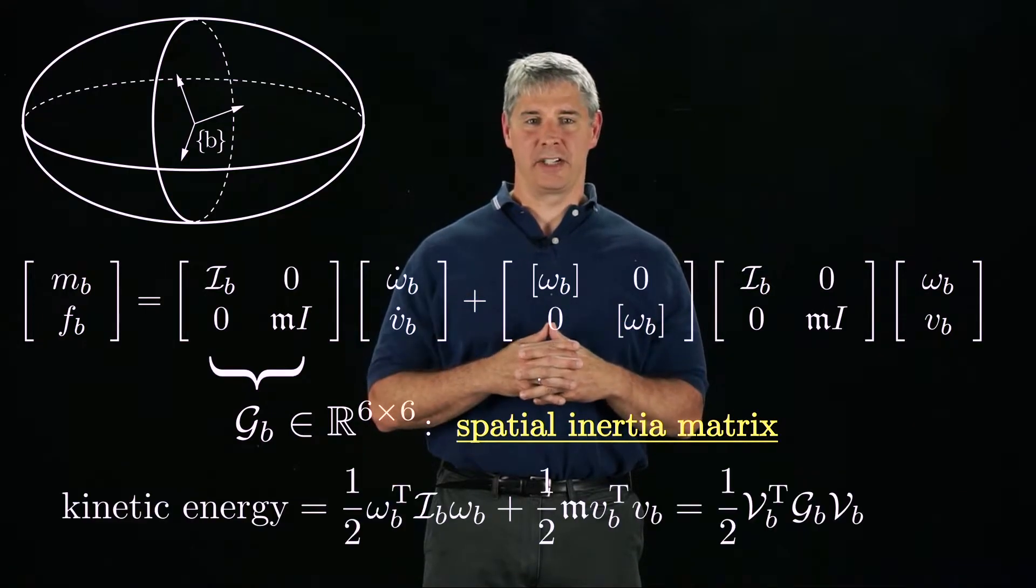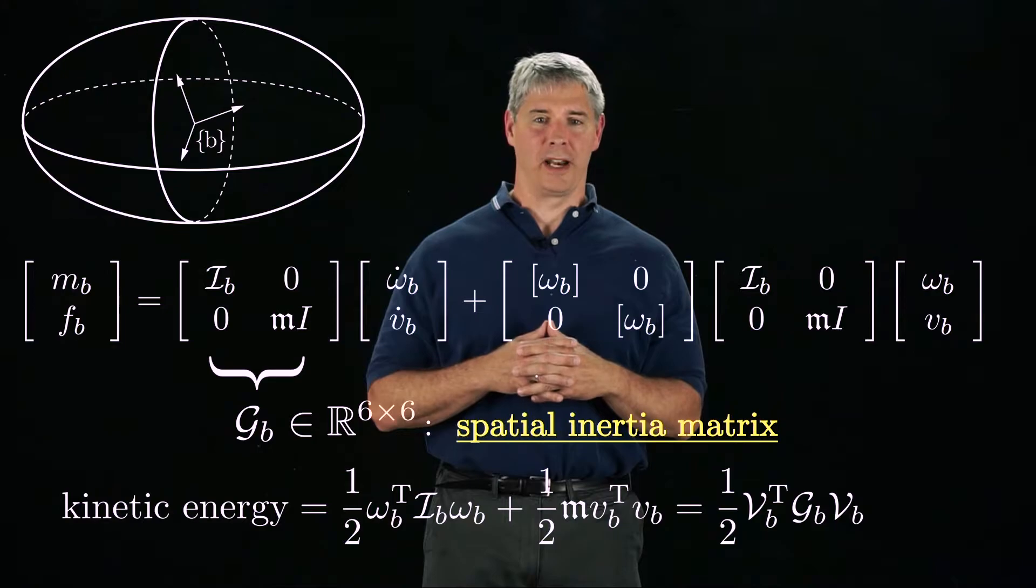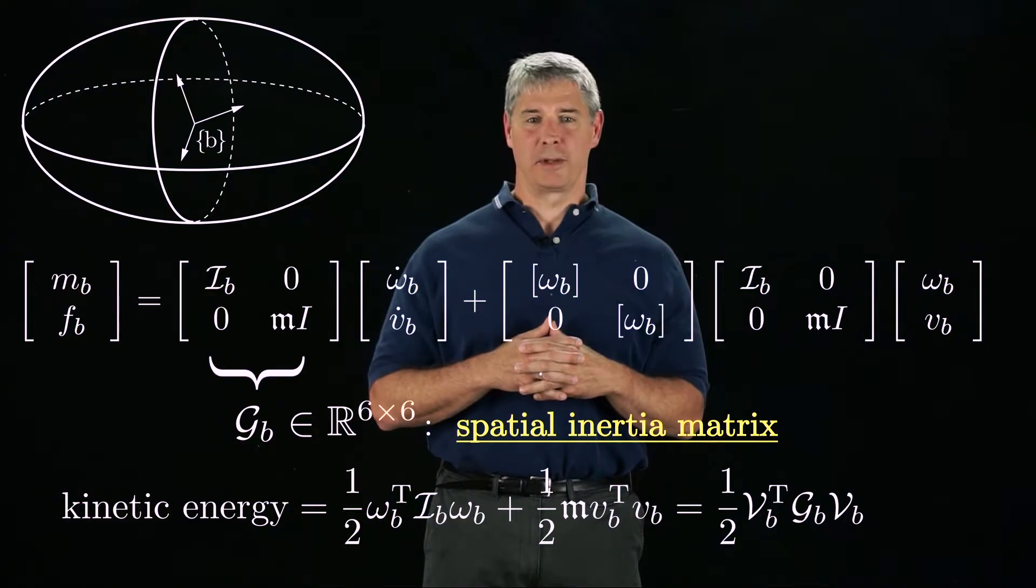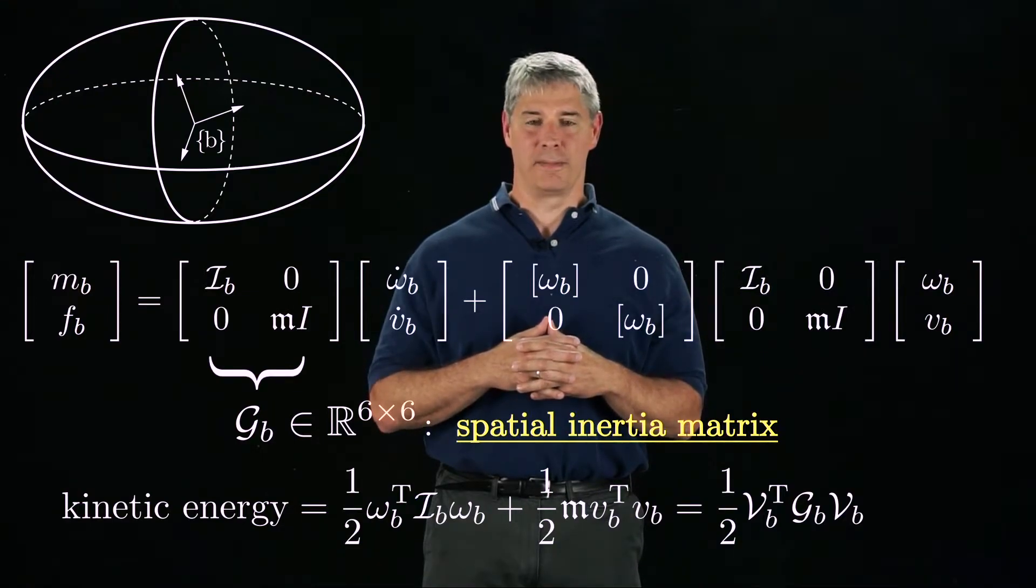With this, the kinetic energy of a rotating and translating rigid body can be written as the sum of the rotational kinetic energy and the linear kinetic energy, or simply one-half times the body twist transpose times GB times the body twist.